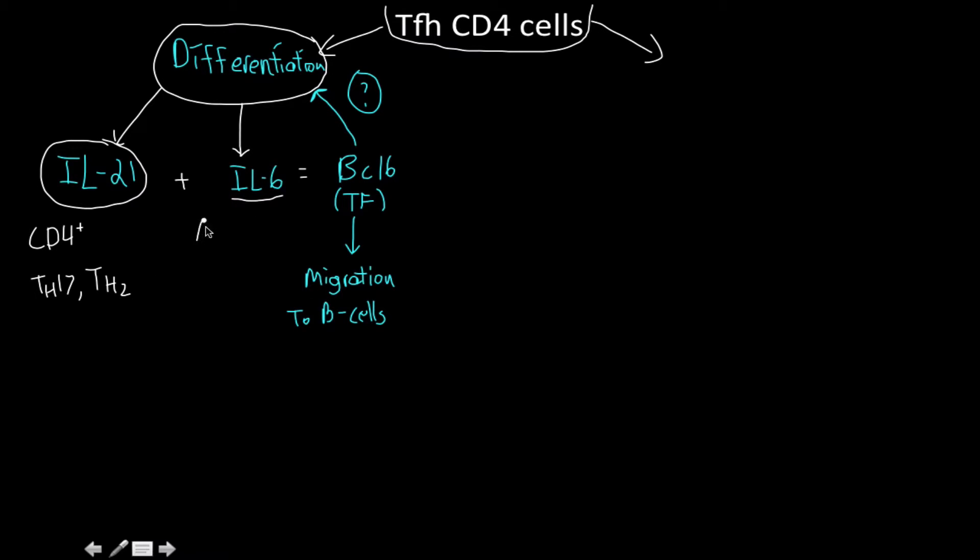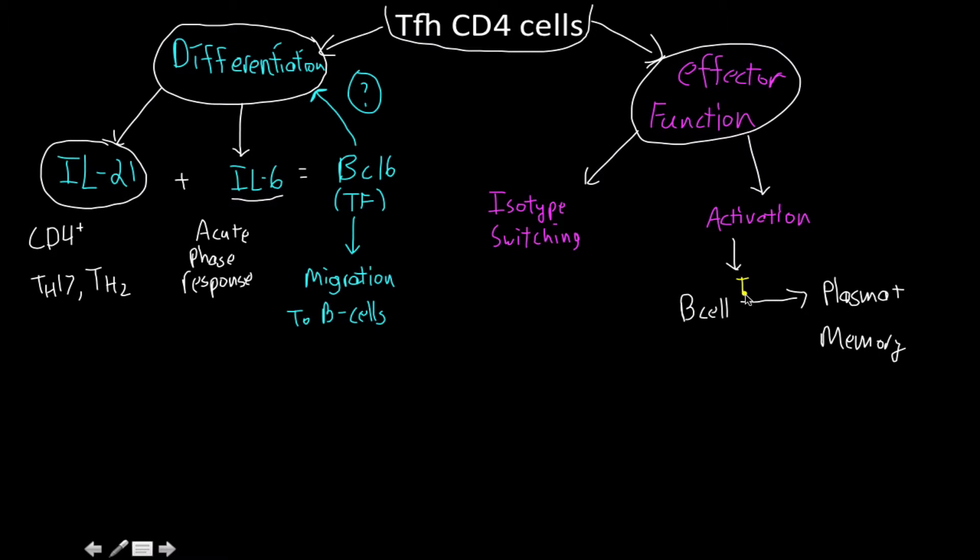For interleukin-6, this is an acute phase response protein. For their effector function, it's really just activating B cells and isotype switching. So you have a B cell and it interacts with T follicular helper cells, and it's differentiated to plasma cells and memory cells.